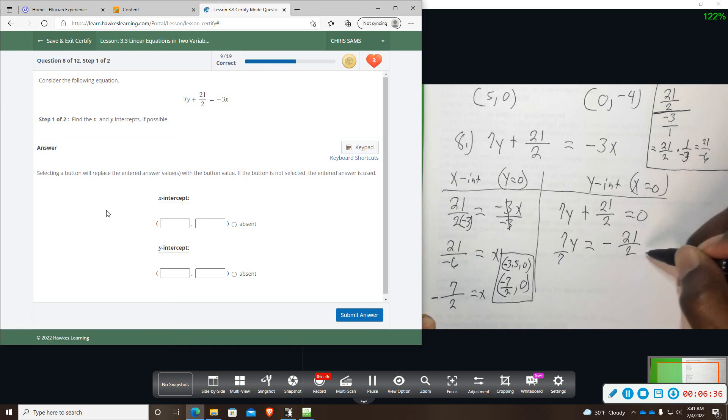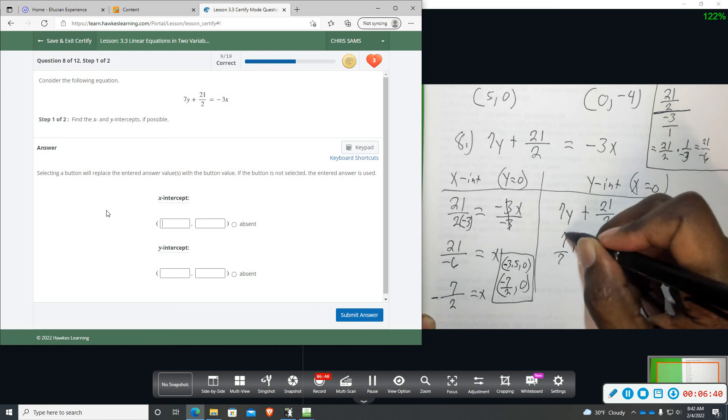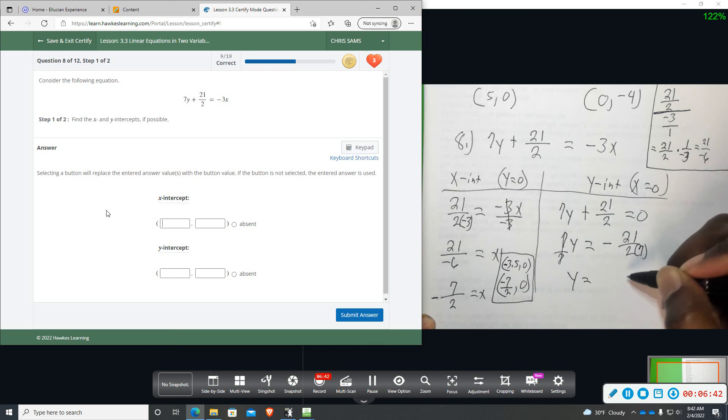So I divide by 7, and then over here, I'm going on the bottom, and then we have y equals negative 21 over 14, and both of these can be divided by 7. So you get y equals negative 3 over 2.